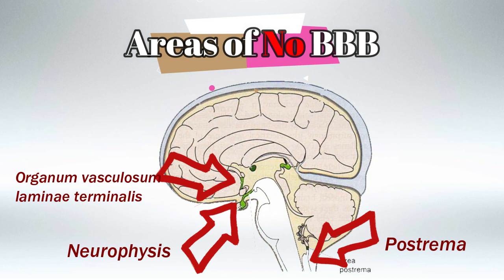These are the three main areas of the nervous system in direct contact with the blood that you need to know. Everything else is covered by the blood-brain barrier. That's everything for today — hopefully this made it easier for you. See you later.